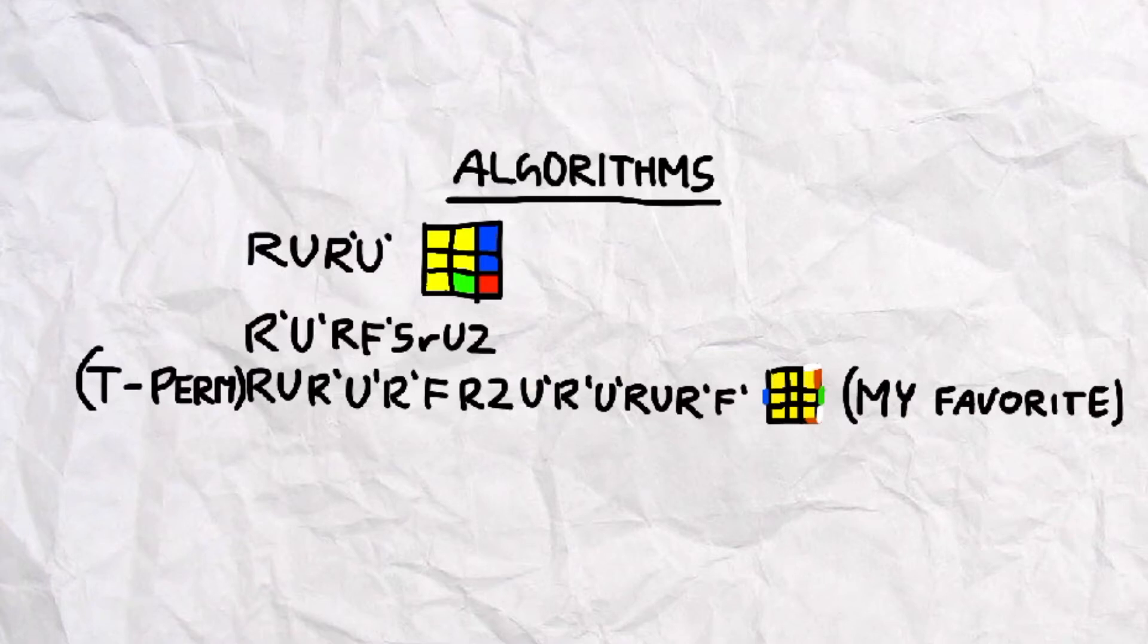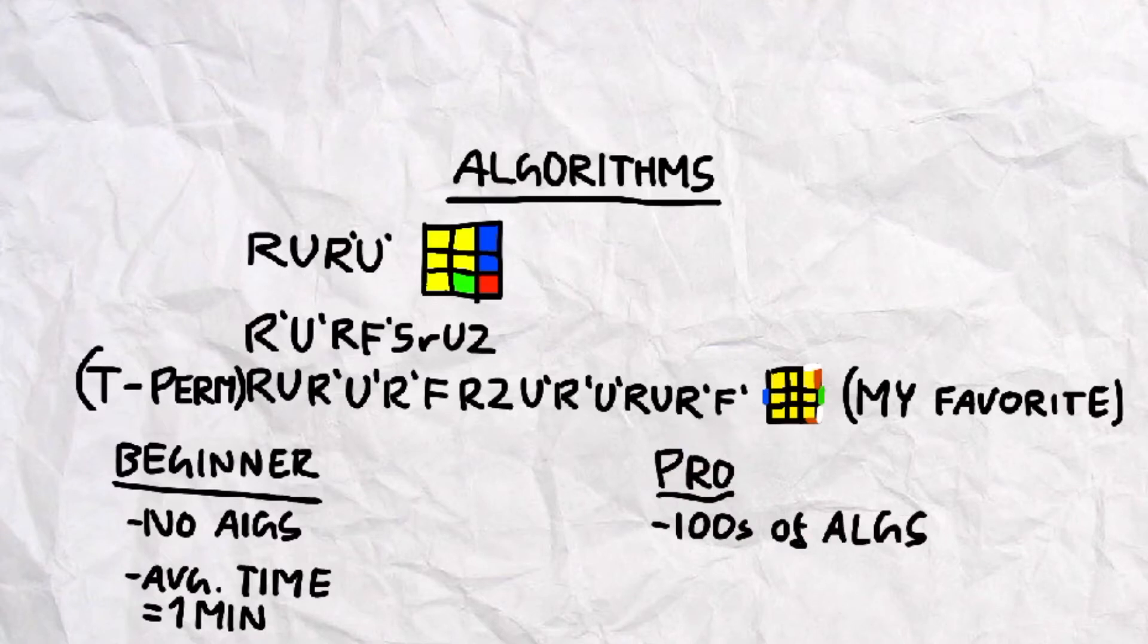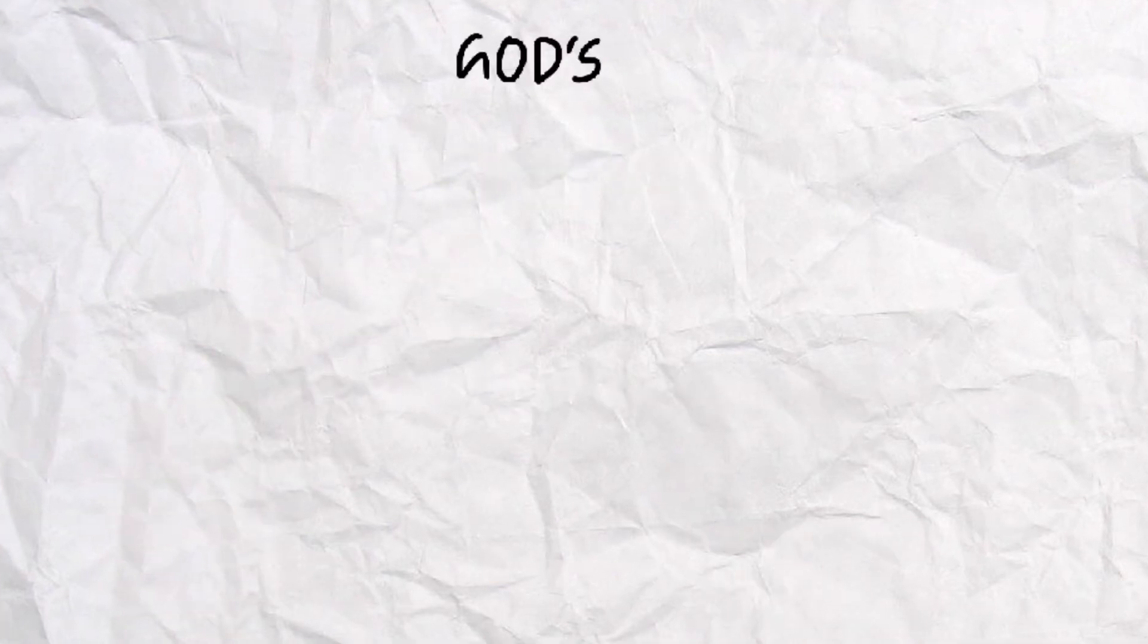As for me, I've memorized 80 algorithms just to solve the last layer of the Rubik's Cube, and thus, my average times have increased significantly. This method is seemingly more effective as it takes away more from the guesswork, resulting in less delay and quicker times just like the world record of 3.47 seconds.